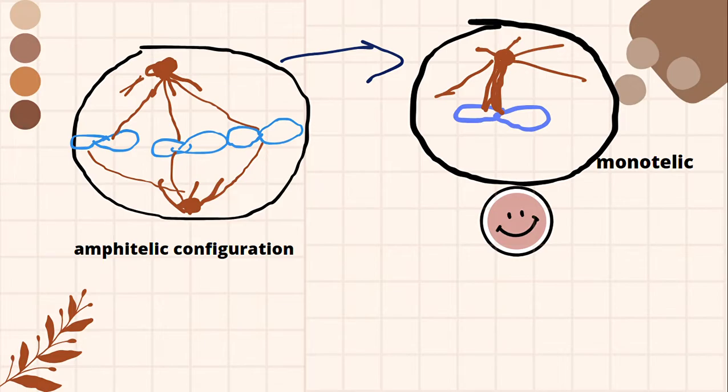But whenever we are talking about that monotelic configuration, which is what happens in which centriole is shown on the North Pole, you can see here, and its spindle fiber is only attached to one side. It is not attached to the other side. So this is called that monotelic configuration. This is not very good, and what you have to do is arrest the cell from here.